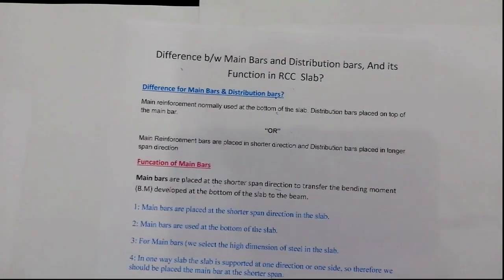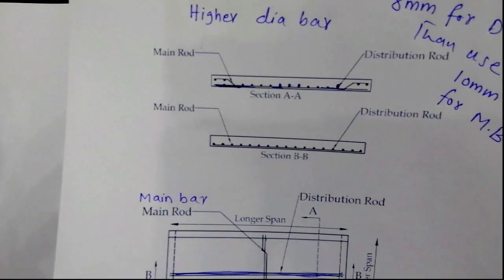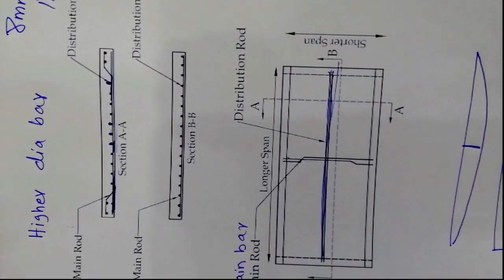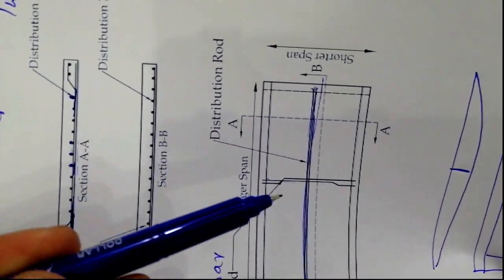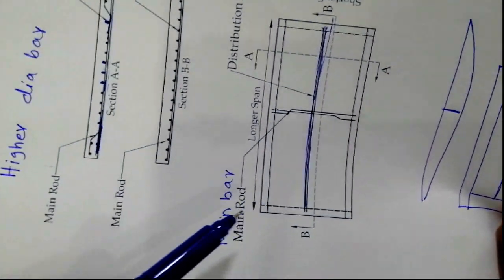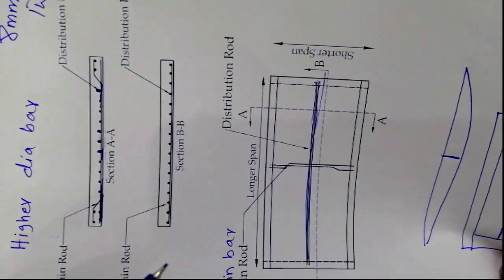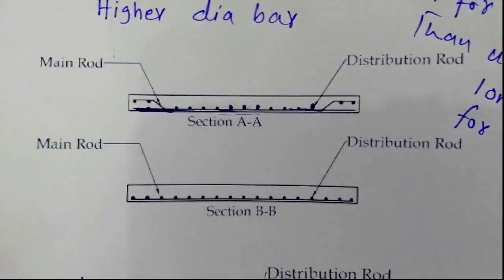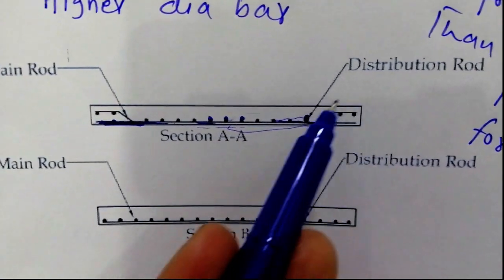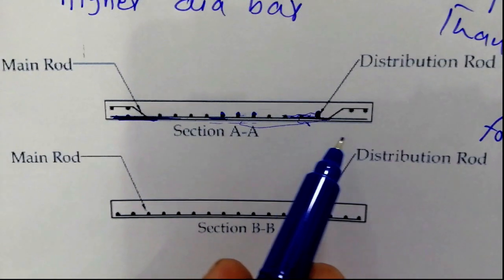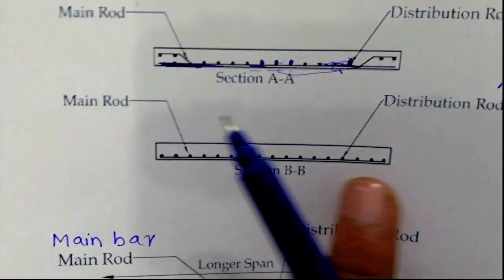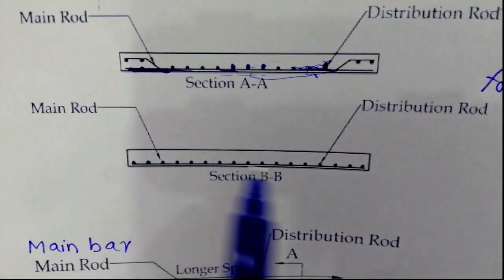This is the main difference between main bars and distribution bars. You can see this diagram — the cross section and top section of RCC slab. You can take a screenshot of this. Bars placed on the shorter span direction are called main bars, and bars placed on the longer span are called distribution bars. In the cross section, main bars are at the bottom of the RCC slab and distribution bars are placed on top of the main bar — you can see the points representing distribution rods. This way you can see the clear difference between main bars and distribution bars.